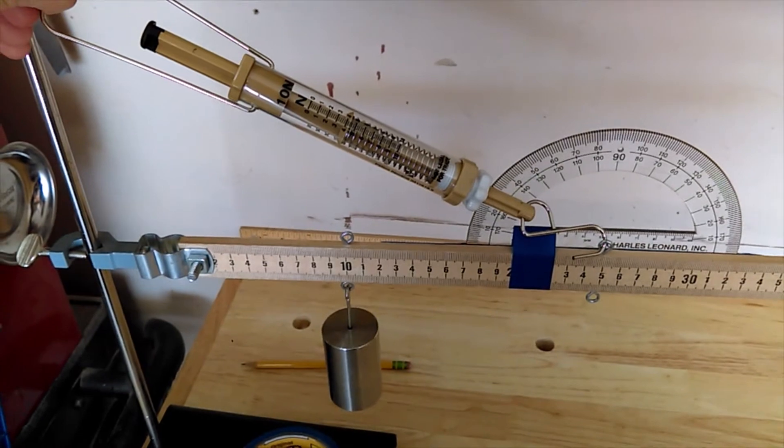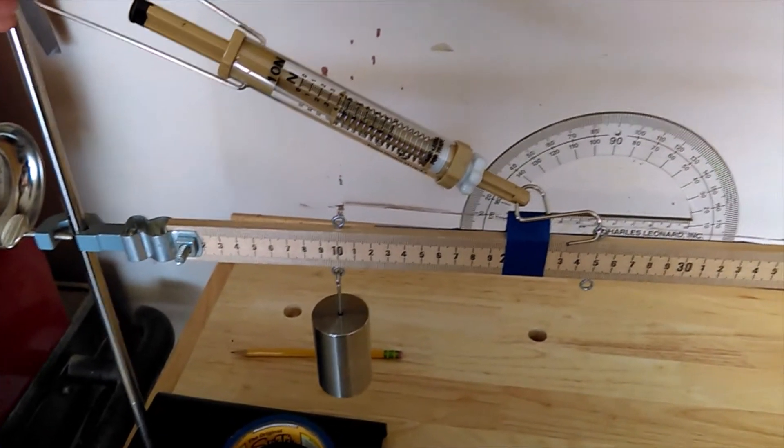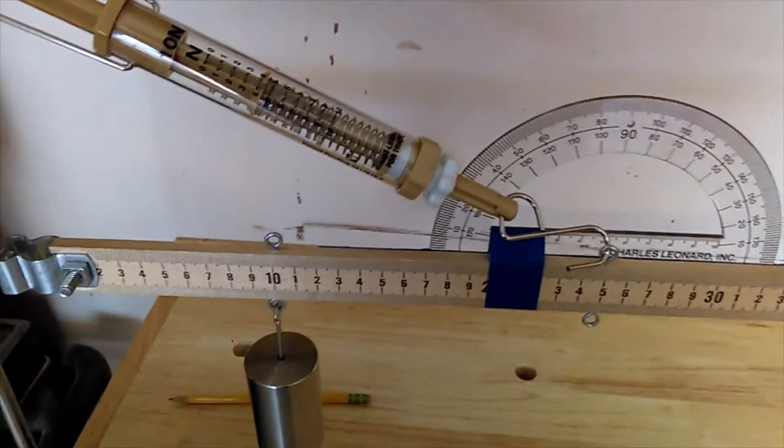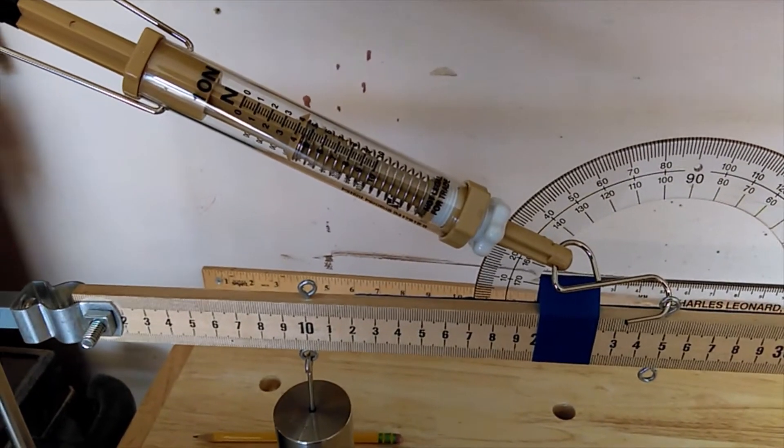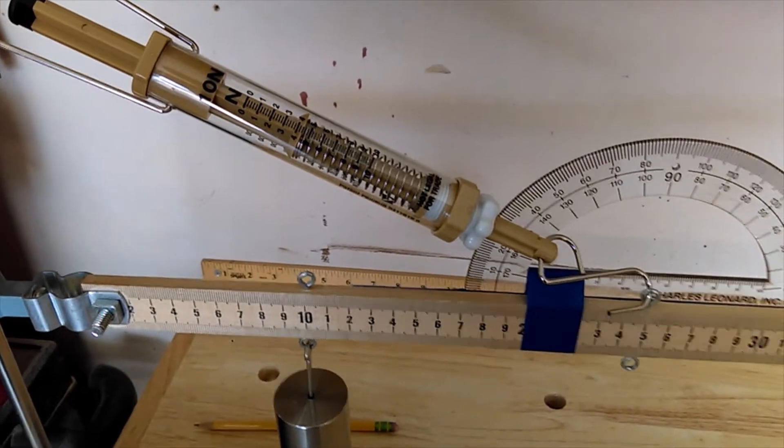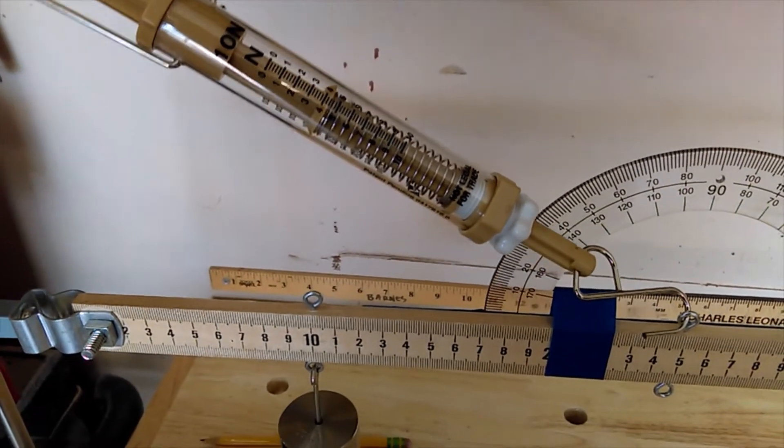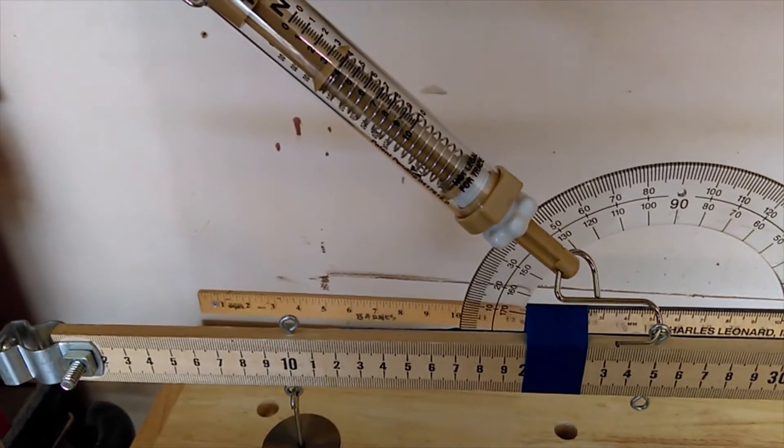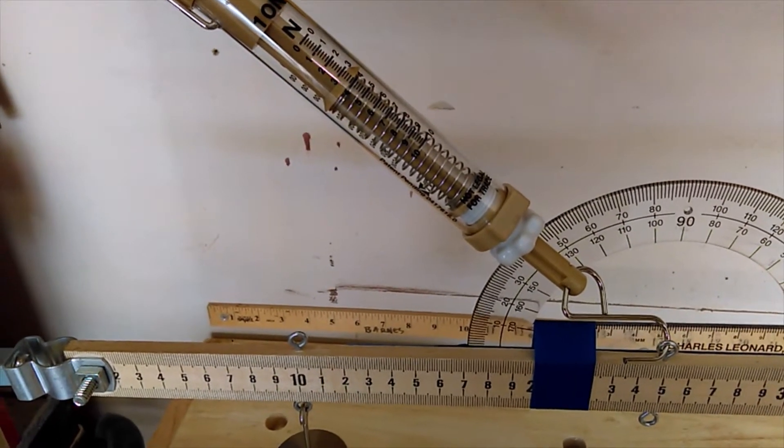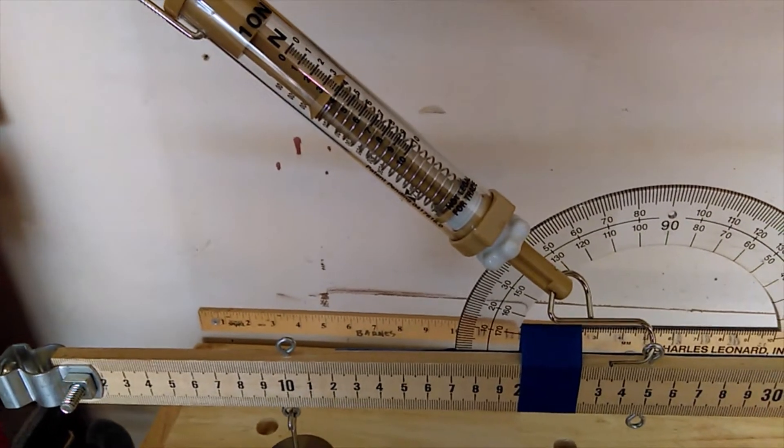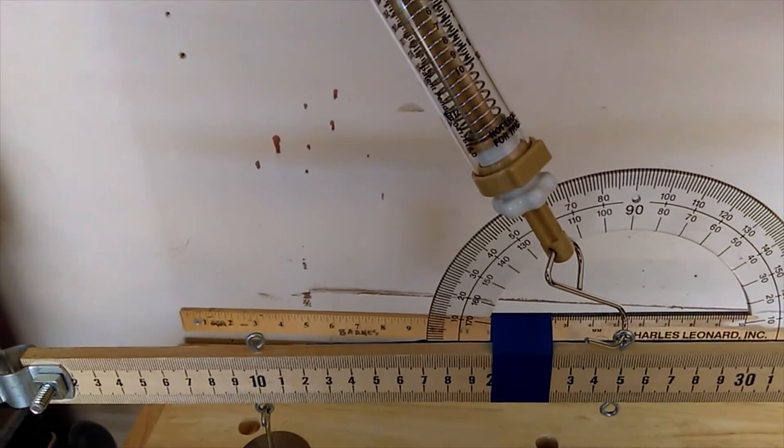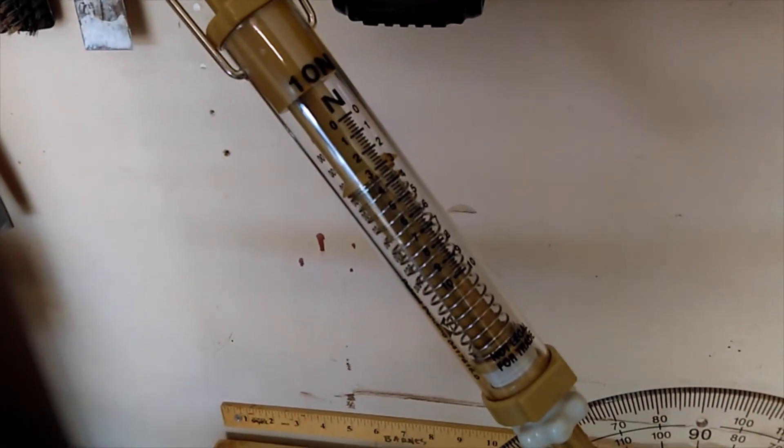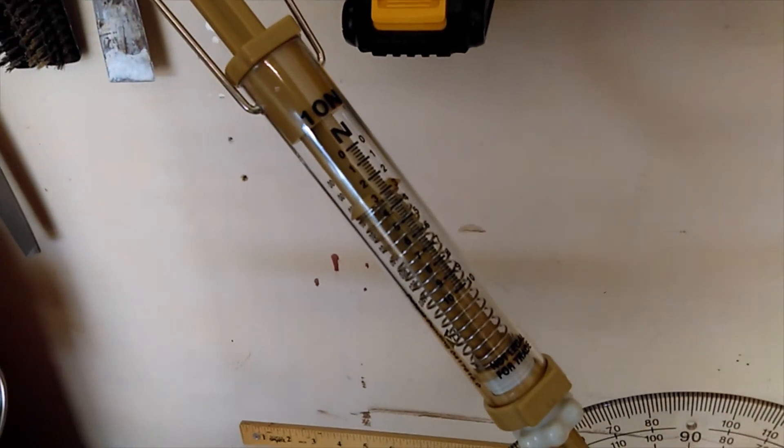For test numbers 16, 17, 18, mass at 10, spring scale clipped at 25. So at 30 degrees, test number 16, we're at 4.4 newtons. At 45 degrees we're at 3.8 newtons for test 17. And then test number 18, now we're at about 3.2 newtons.